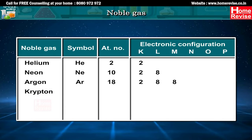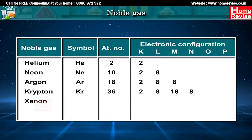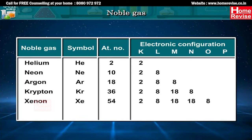Krypton, symbol Kr, atomic number 36, electronic configuration 2, 8, 18, 8. Radon, symbol Rn, atomic number 36, electronic configuration 2, 8, 18, 32, 18, 8.